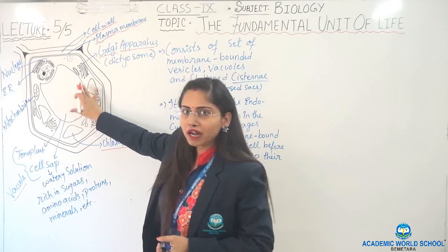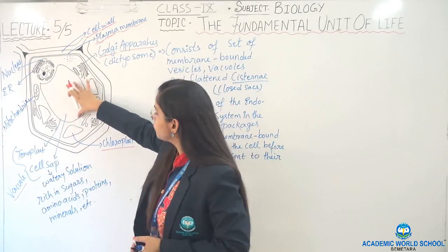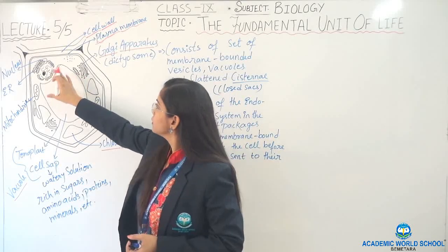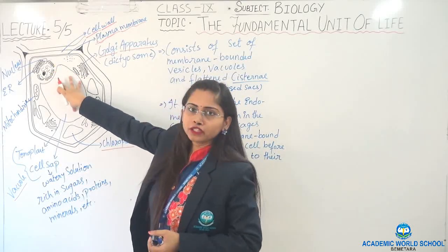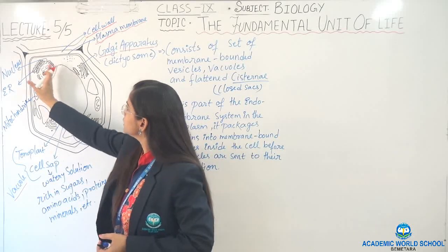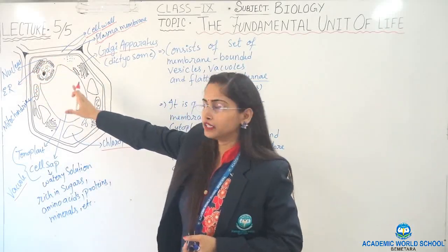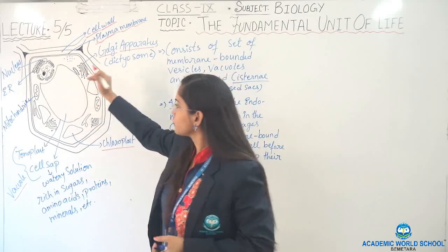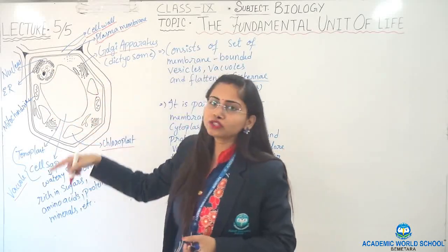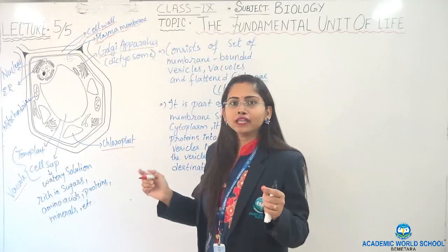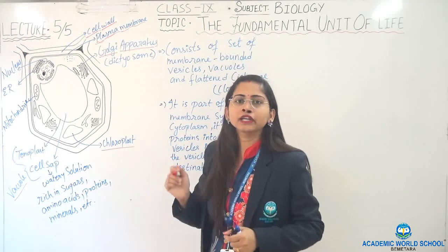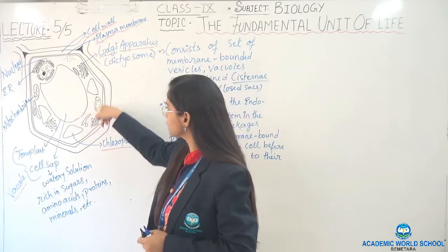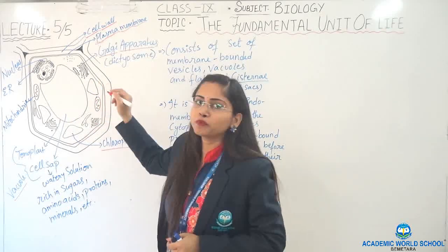Inside the plant cell you can see this big structure — this is the vacuole. Because of the presence of this big-sized vacuole, the nucleus is pushed towards the periphery, towards the plasma membrane at the corner. The cytoplasm is of two types: cytosol and cell organelles. Cell organelles are the living parts which perform different functions.